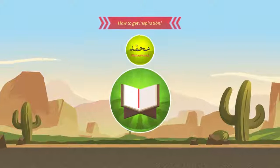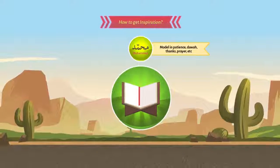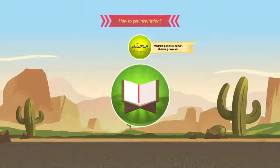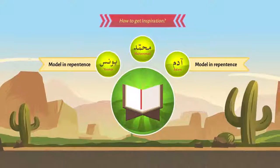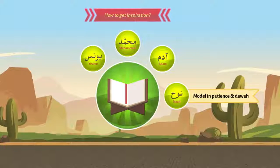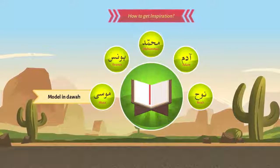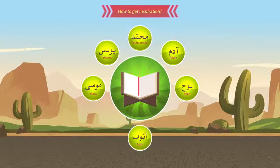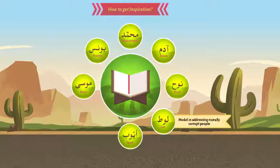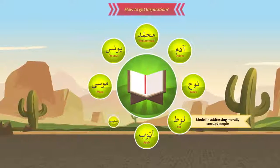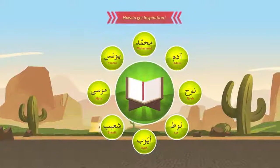For example: Prophet Muhammad sallallahu alayhi wa sallam's model in patience, in thanking Allah, da'wah, struggle, and prayers. Adam alayhi wa sallam's and Yunus alayhi wa sallam's model of repentance. Nuh alayhi wa sallam's model in patience and variety in giving da'wah. Musa alayhi wa sallam's model in handling an oppressed nation and giving da'wah to oppressors. Ayyub alayhi wa sallam's model in facing sickness and pain. Lut alayhi wa sallam's model in addressing morally corrupt people. Shu'aib alayhi wa sallam's model in giving da'wah to cheaters, and so on.